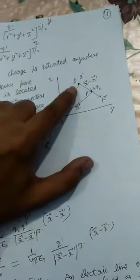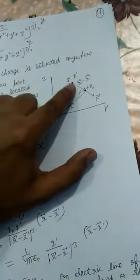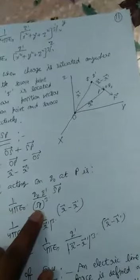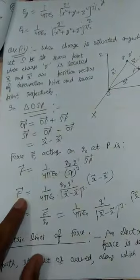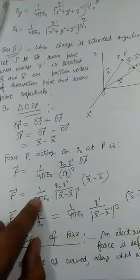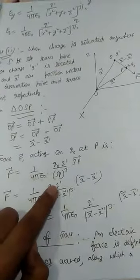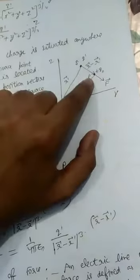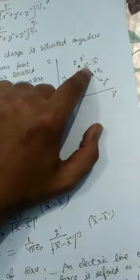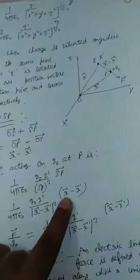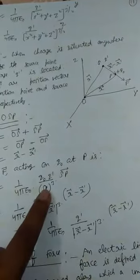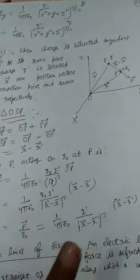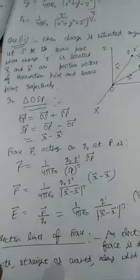From S to P, we will have SP vector over SP cube, that is force is equal to 1 upon 4 pi epsilon 0, Q0 into Q', SP vector is equal to R vector minus R' vector. Put here, R vector minus R' vector over SP cube means its mod then cube.